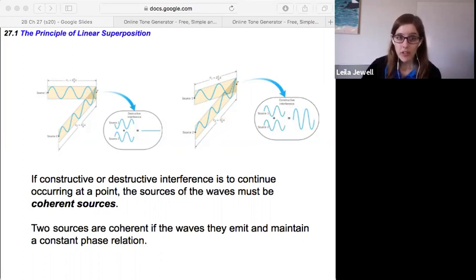That gives you an introduction to our principle of linear superposition, how we can look at the effect of two waves and see how there is constructive and destructive interference depending on the path length difference between them.